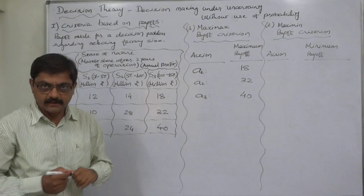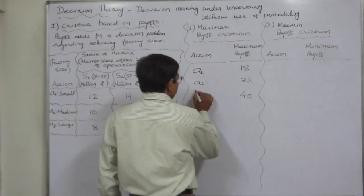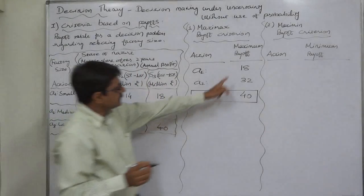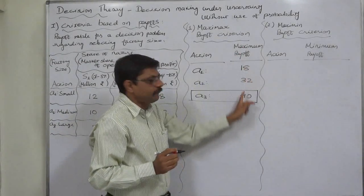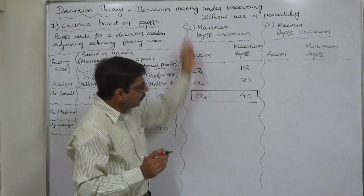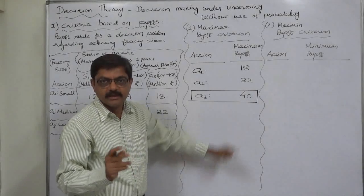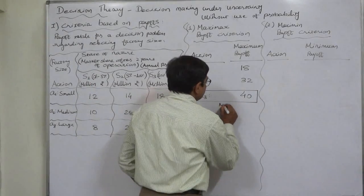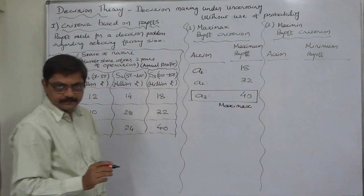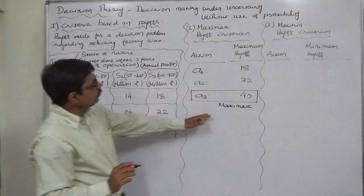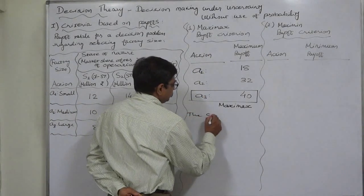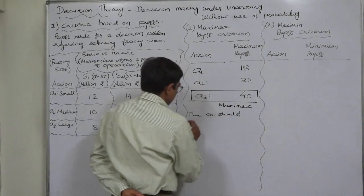What maximax payoff criterion suggests: the maximum out of the maximum payoffs of all the alternatives should be selected. That means out of these three also we need to select the maximum. So this is maximum of the maximum, that is maximax. So according to maximax payoff criterion, the company should create...